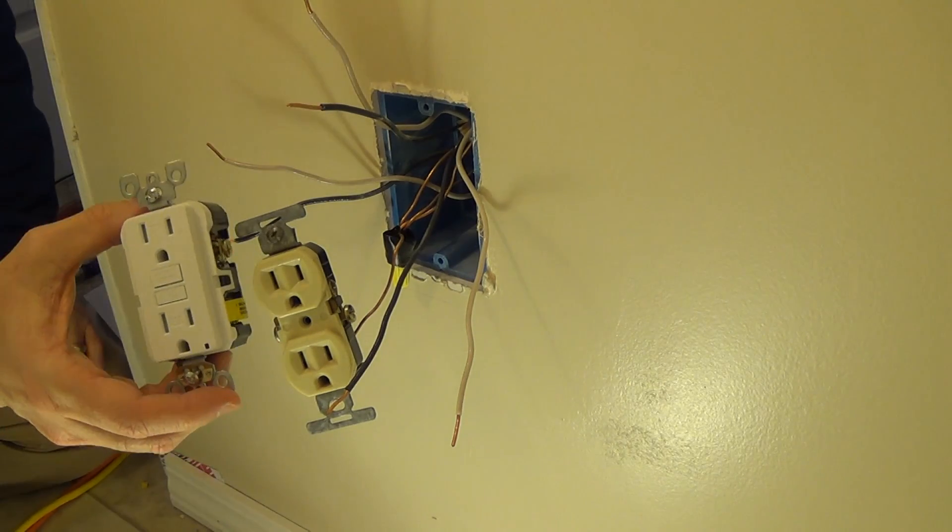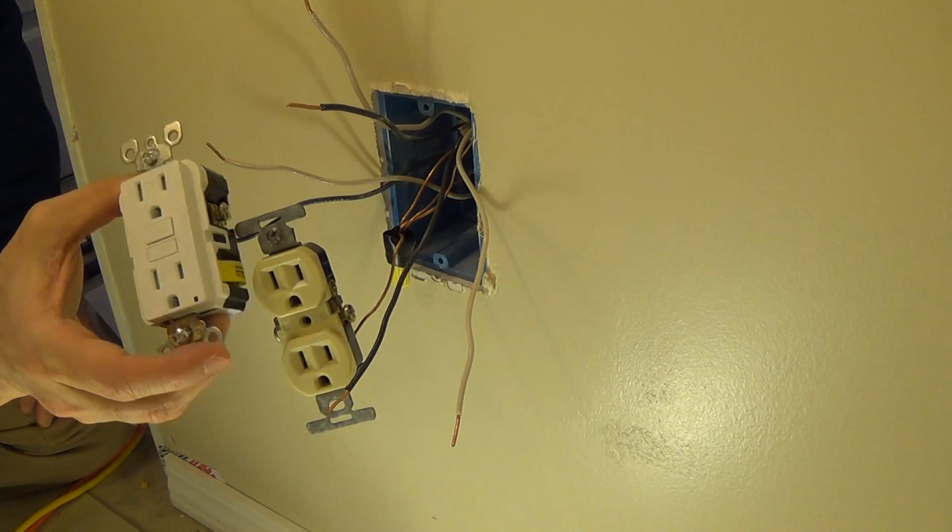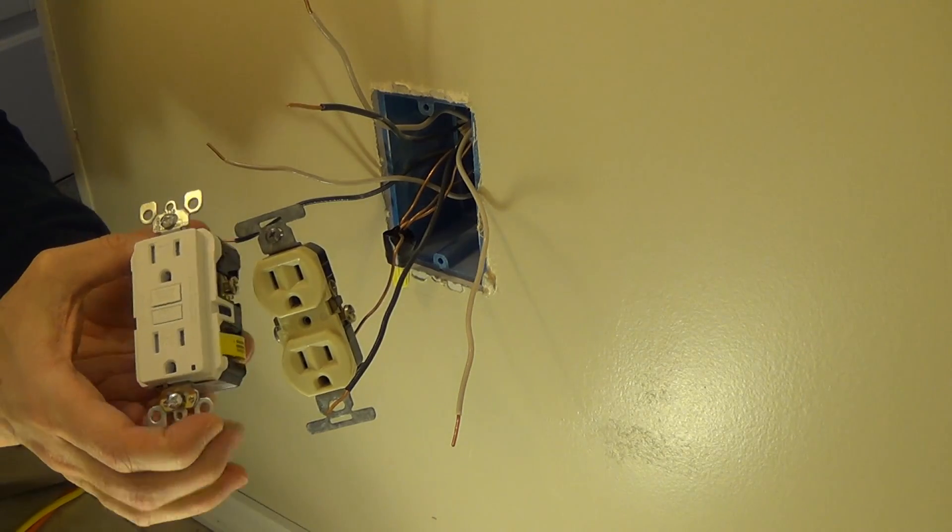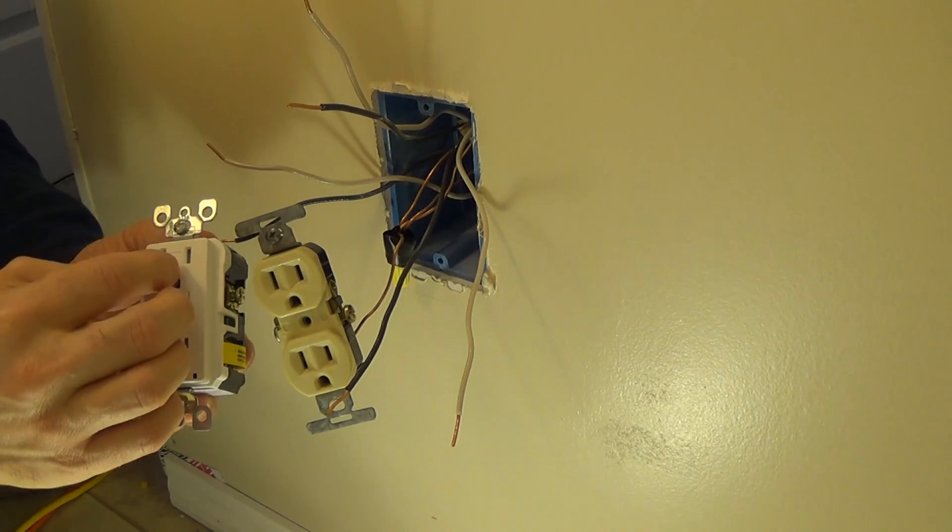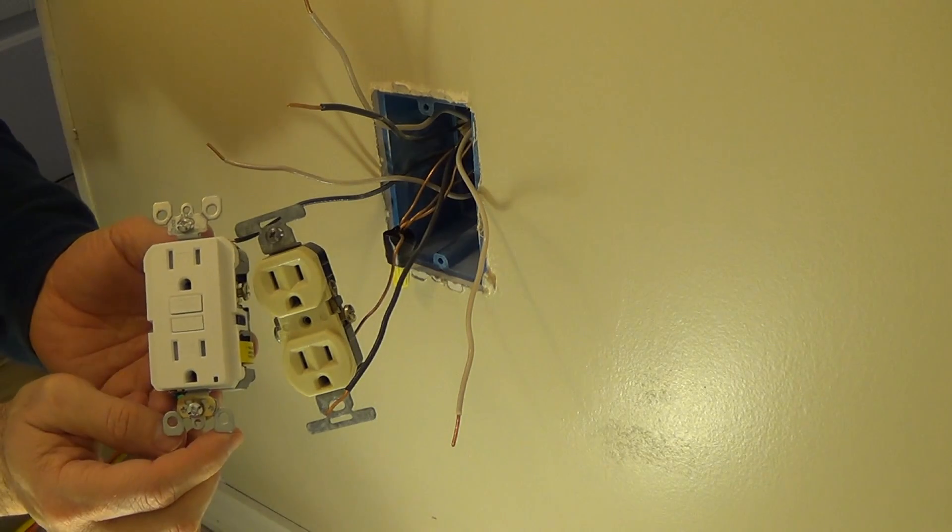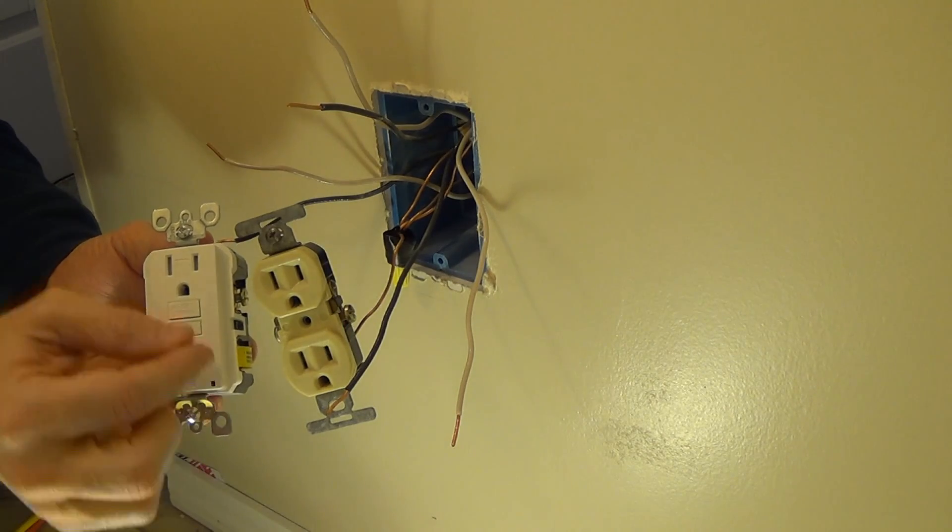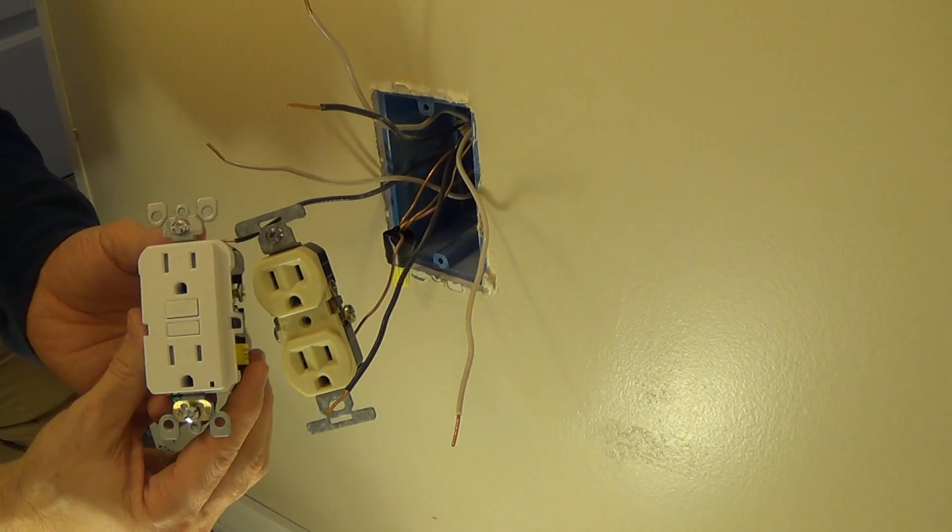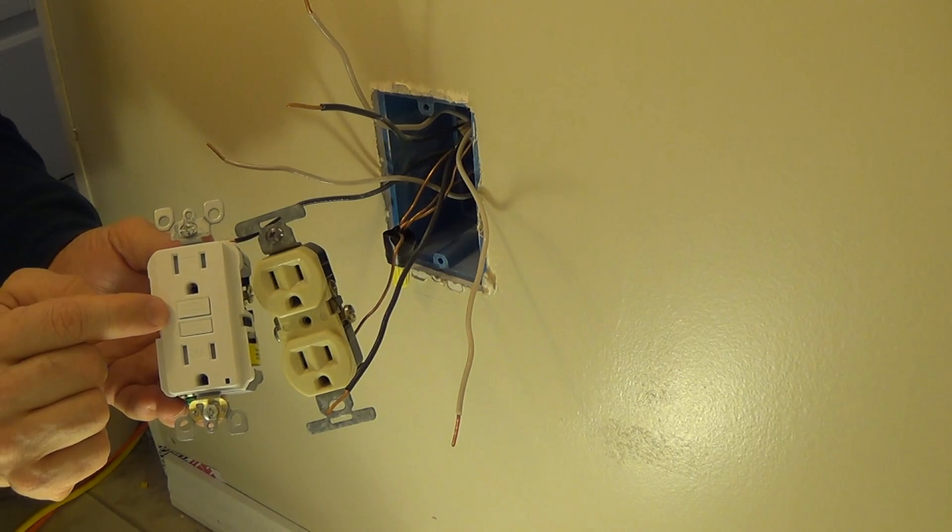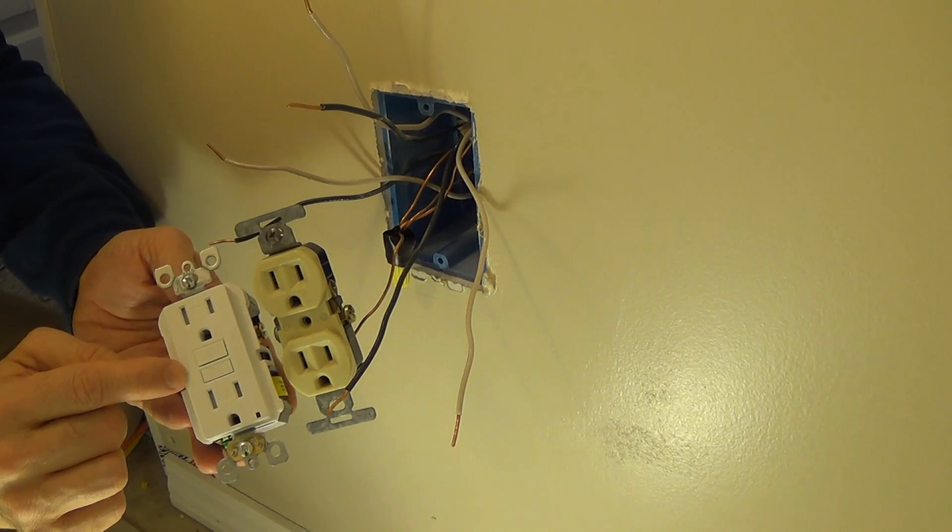Now what is ground fault? Well, ground fault is when the current flows somewhere else. Let's say a bunch of water hits this and the electricity goes into the water, well the current is flowing someplace else, or let's say a mouse chews on one of these wires. Well, the current could go someplace else and when that happens this will break and prevent the current from flowing.